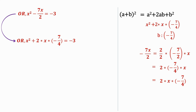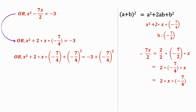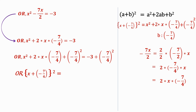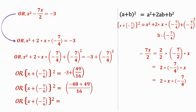Our work now is to arrange the terms on the LHS in the form of a² + 2ab + b², but we don't have a term equivalent to b² here, so we will have to get one. So what we do is add (-7/4)² on both sides. This gives us x² + 2 × x × (-7/4) + (-7/4)² = -3 + (-7/4)², where (-7/4)² = 49/16, and the RHS becomes -3 + 49/16 = 1/16.